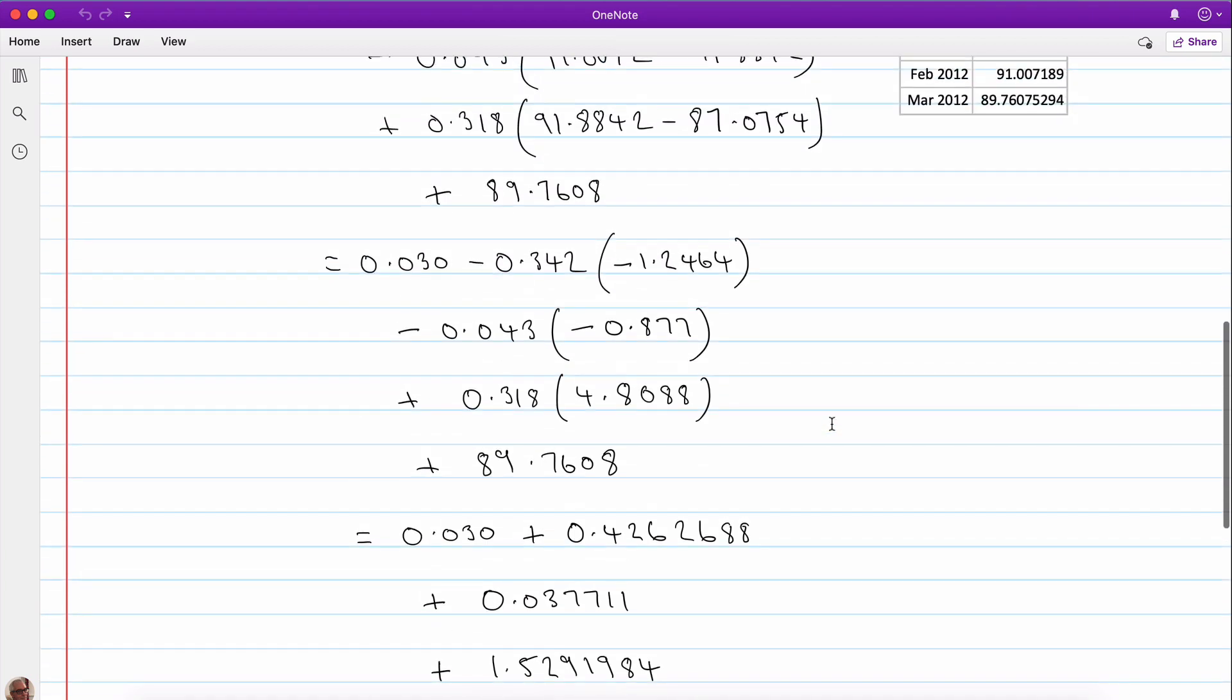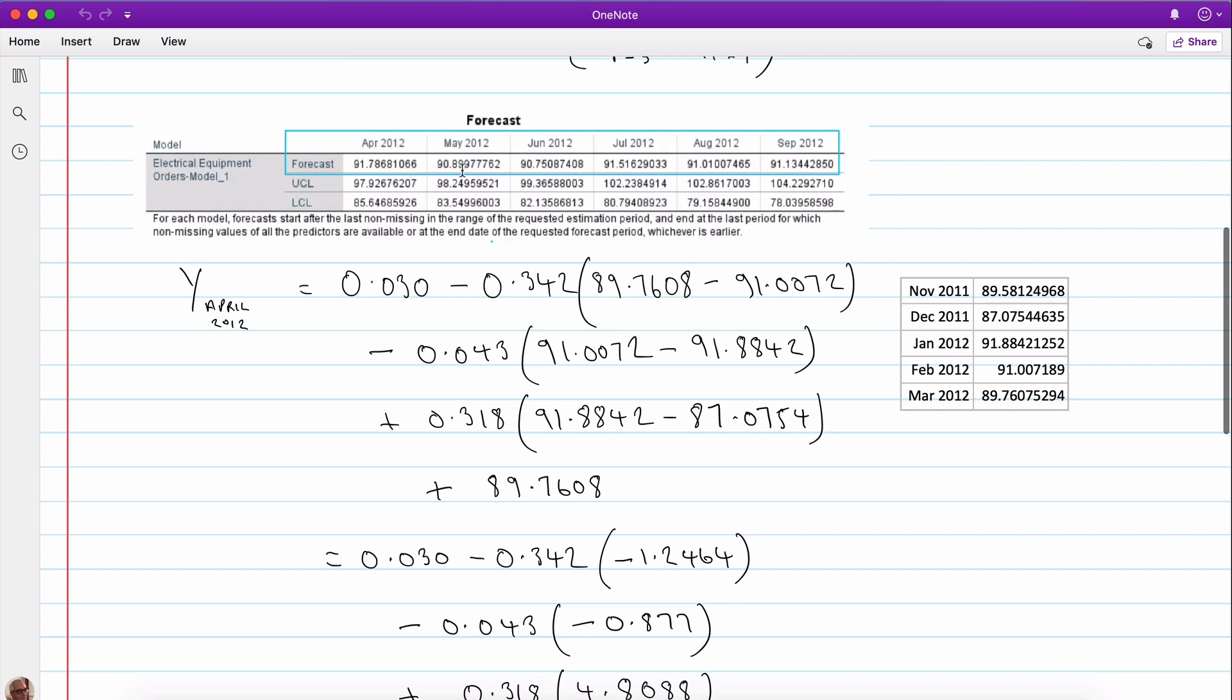So that's how we can calculate that first forecast. Now if we wanted the second one, of course then t now becomes May, so t minus one becomes April, t minus two becomes March, and so on.